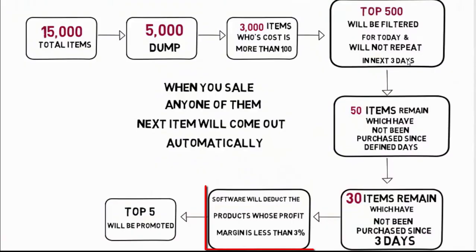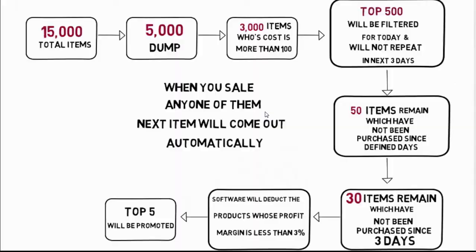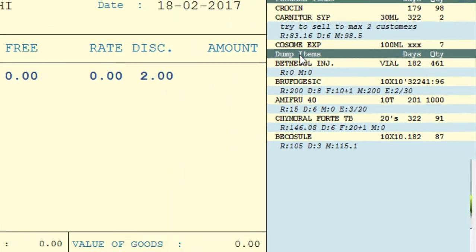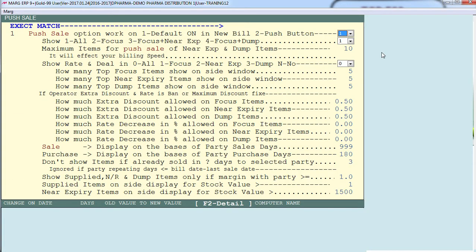Next, the software will filter out products whose profit margin is less than 3%. Only those products will be promoted on the dashboard from whose sale you are getting 3% or more margin. To define the margin percentage, go to the field 'show supplied, near expiry and dump items only if margin with party greater than' and define the margin rate. After setting all these filters from the control room, the top 5 products will be promoted on the dashboard. When you sell any one of them, the next item will come up automatically — meaning when you click on any item and load it in the bill, it leaves this list and the next item appears.